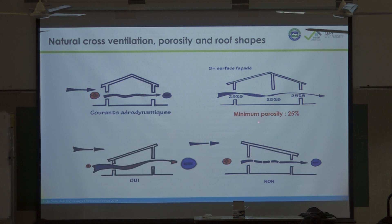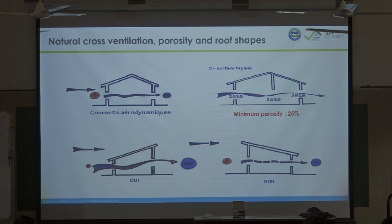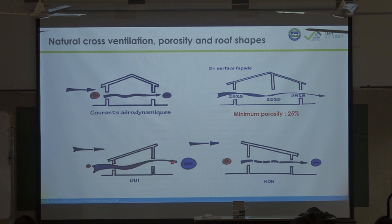The porosity — which I define as the percentage of openings in each facade — must be sufficient. The minimum percentage in Reunion is 25 percent; for tropical climates I think a minimum of 30 percent would be better, on both sides and inside the building to minimize friction. Always combine the difference of pressure with a porosity of 25 percent on each facade.